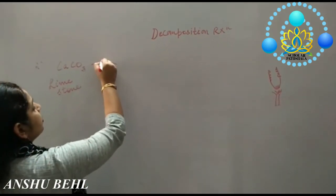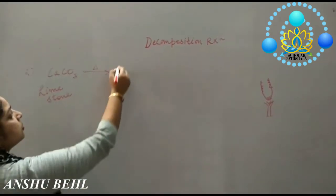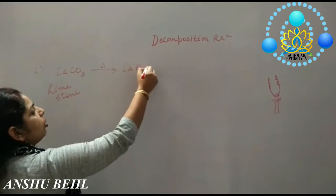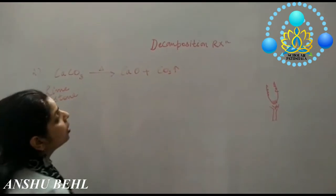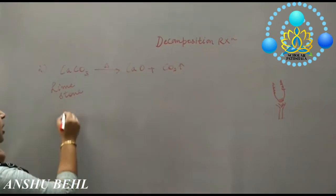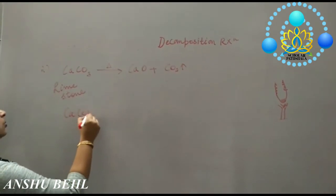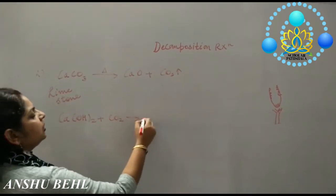On heating, this triangle is symbol of heat, on heating it will form Calcium oxide plus carbon dioxide gas. This carbon dioxide gas when it will come out, it can be passed through lime water and lime water will turn milky.